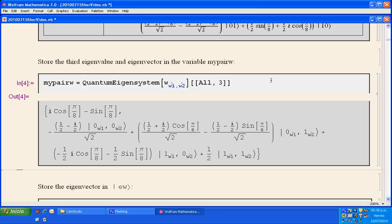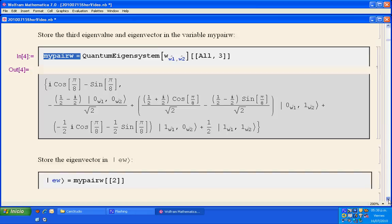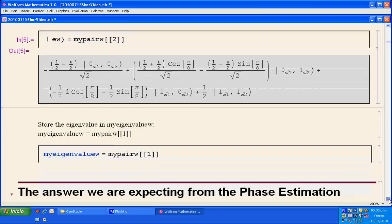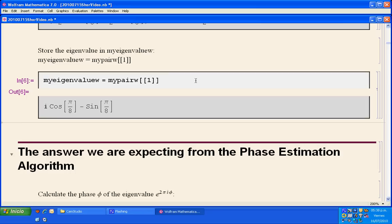Here we select the third eigenvalue and its corresponding eigenstate and store it in the variable MyPairW. We store the eigenstate in KETEW, which is used below in the computing circuits, and we store the eigenvalue in the variable MyEigenValueW.